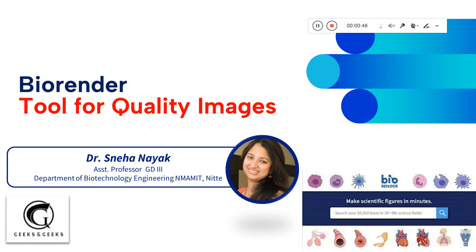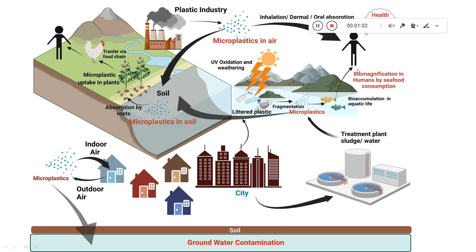This BioRender tool will help you in creating good quality images with more than 600 DPI. The icons provided by this particular tool will help you in creating quality images which can be used for journal publication.